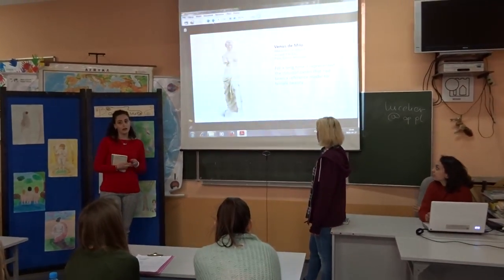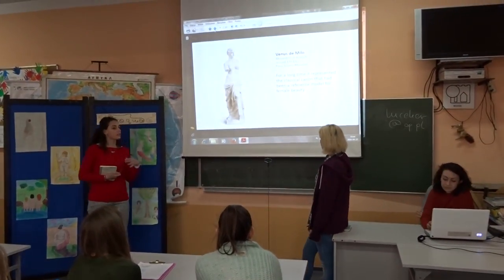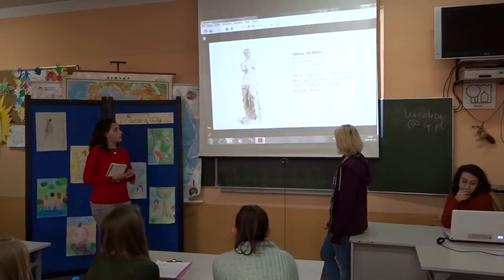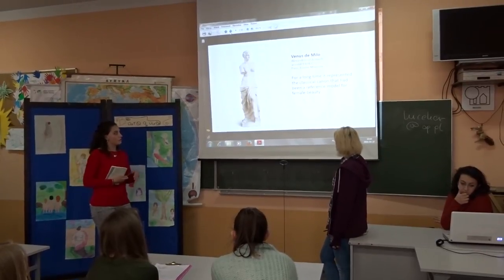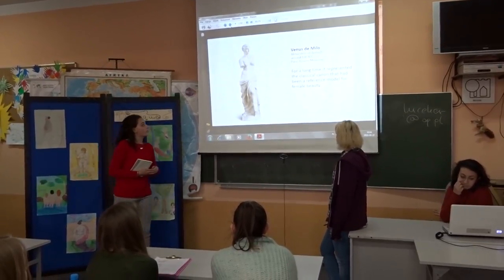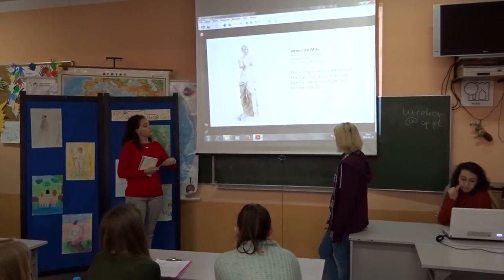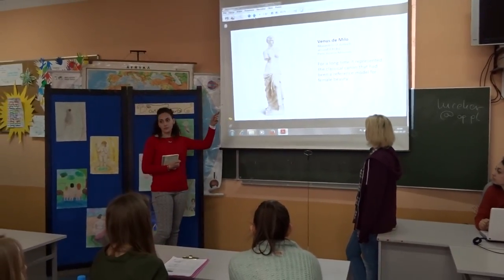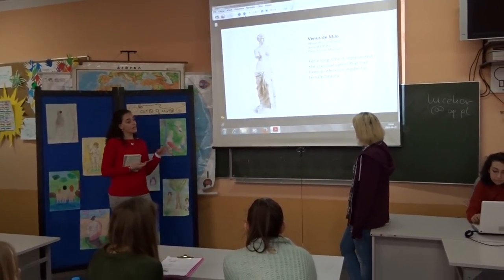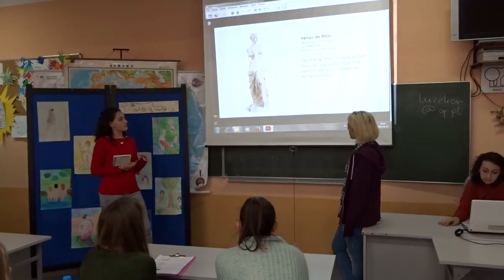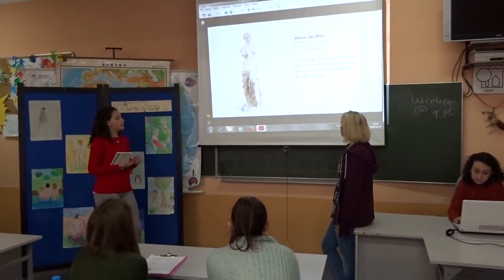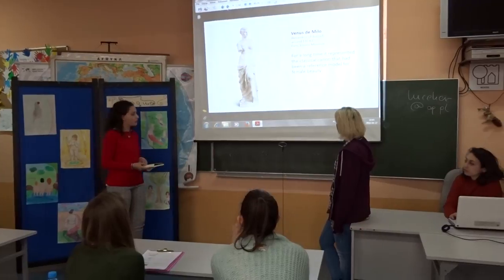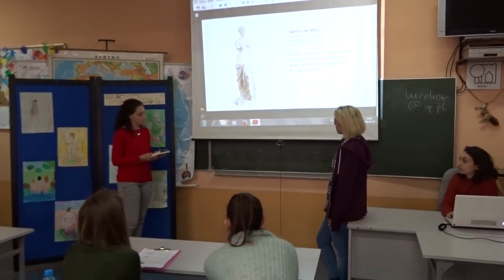This is the Venus de Milo, an important sculpture from 133 BC. We can see this sculpture at the Louvre Museum in Paris, and for a long time it represented the classical canon that had been a reference model for female beauty.